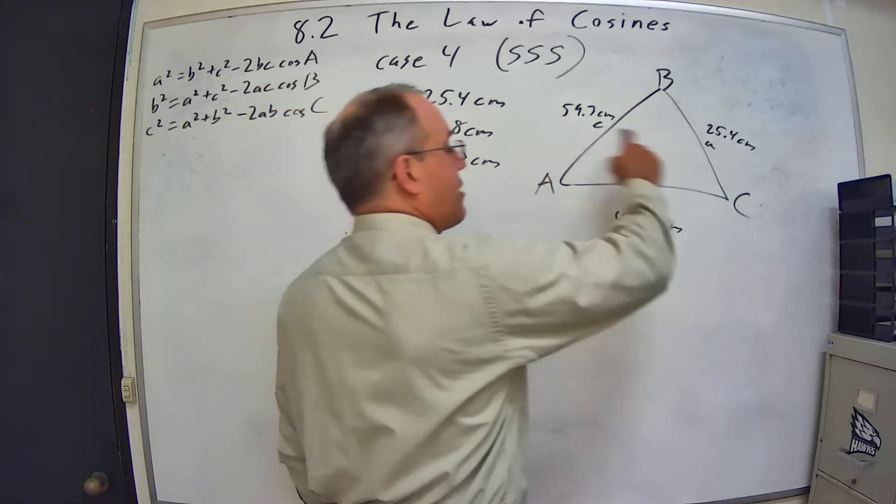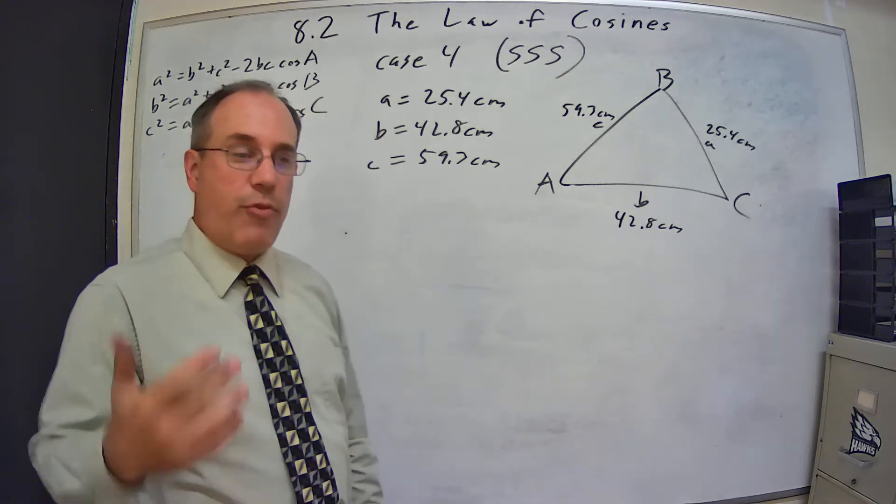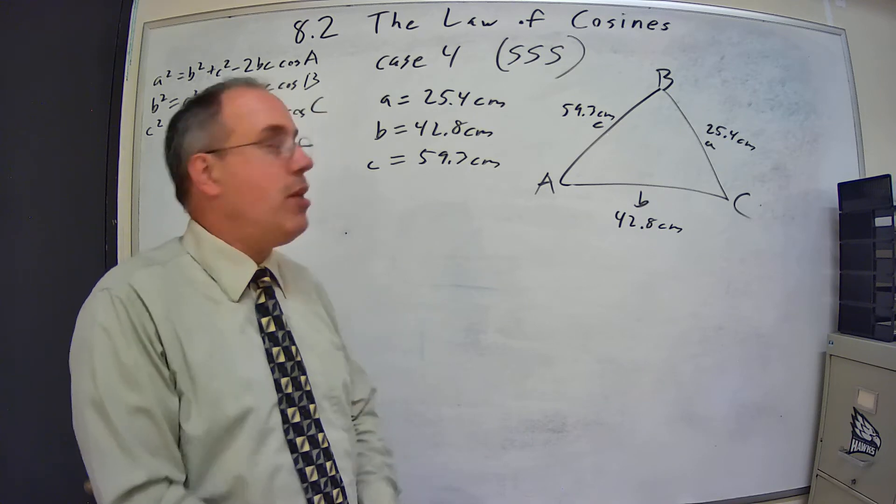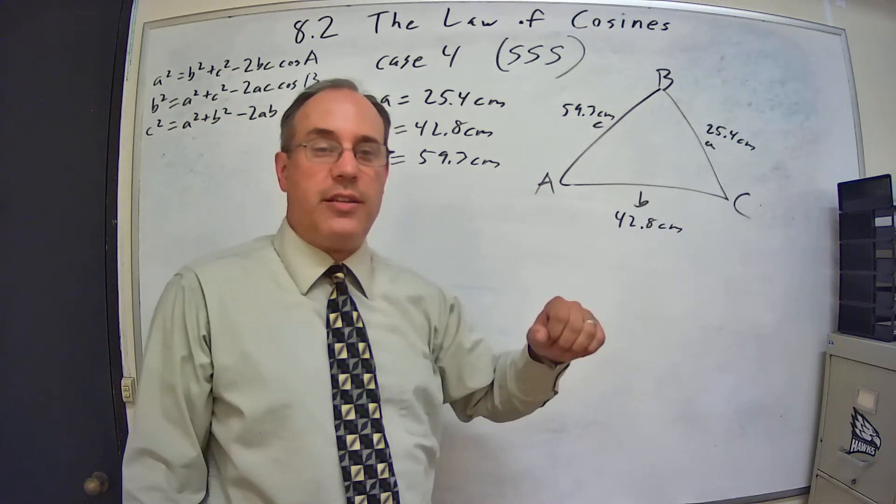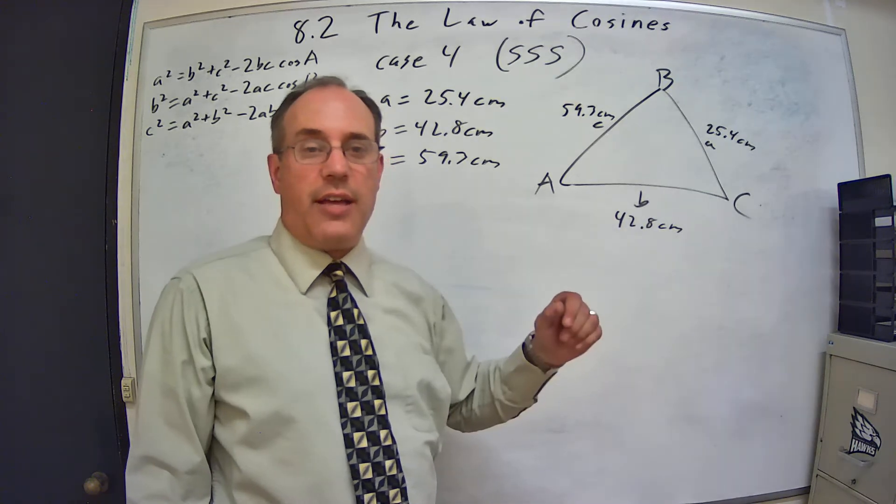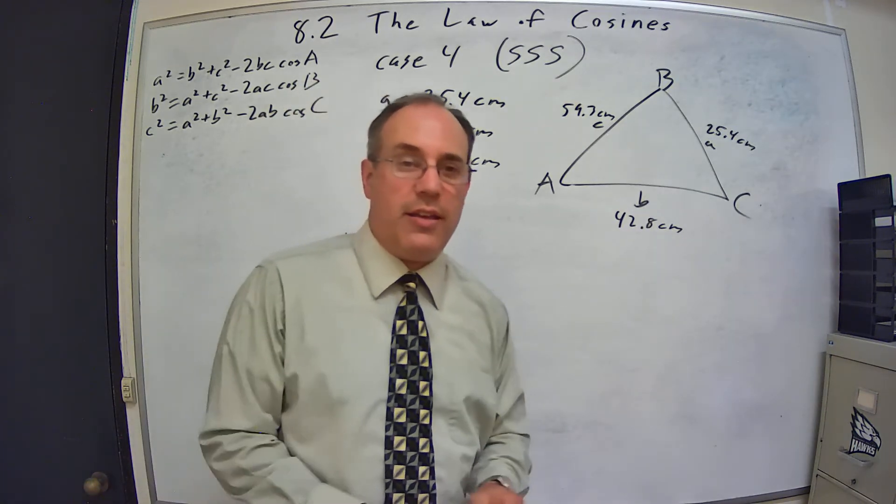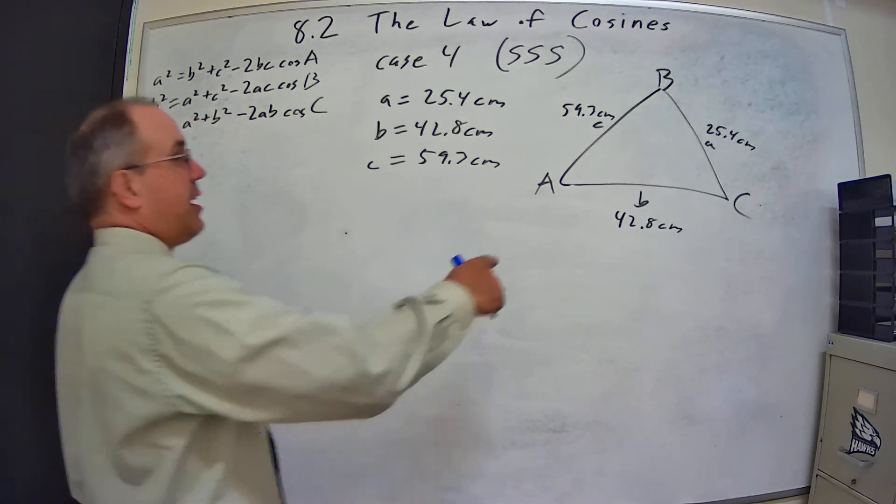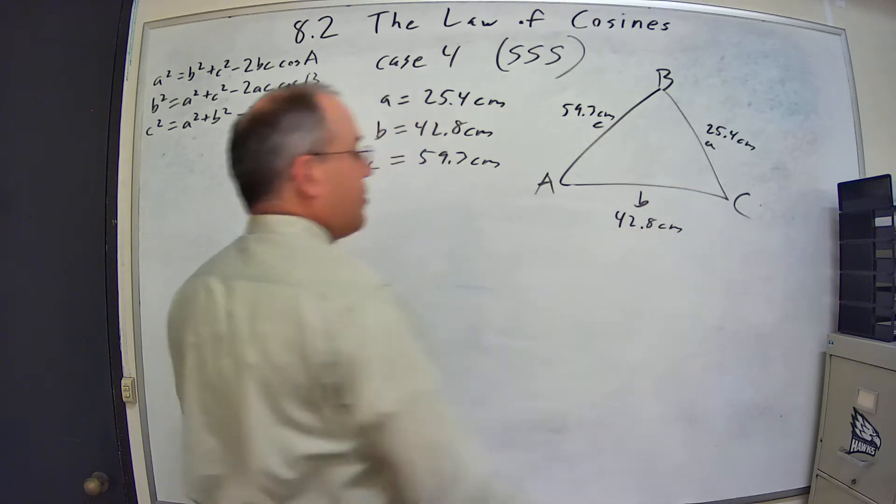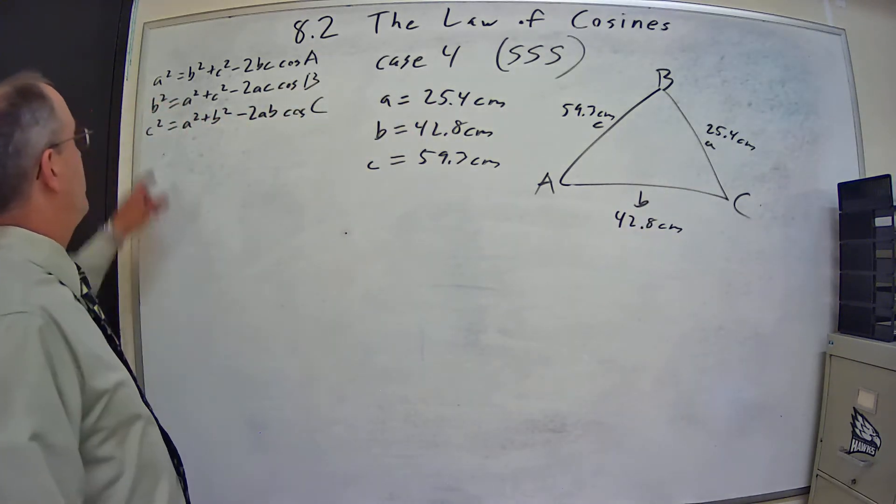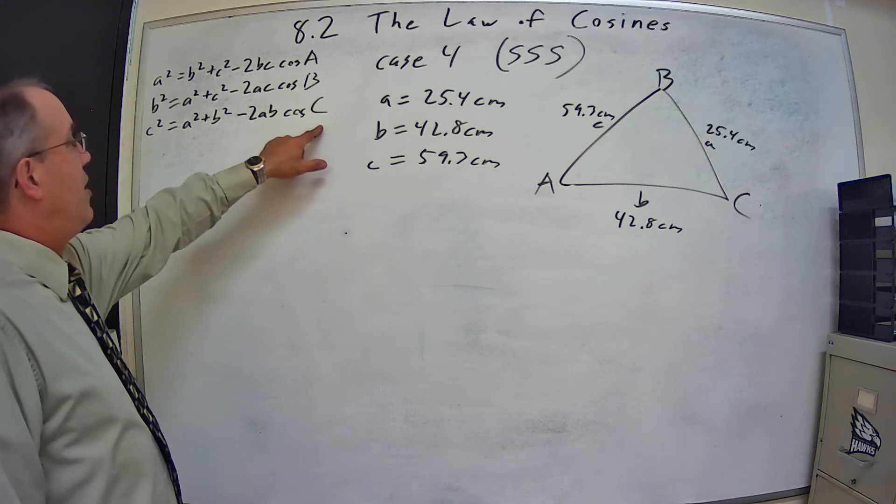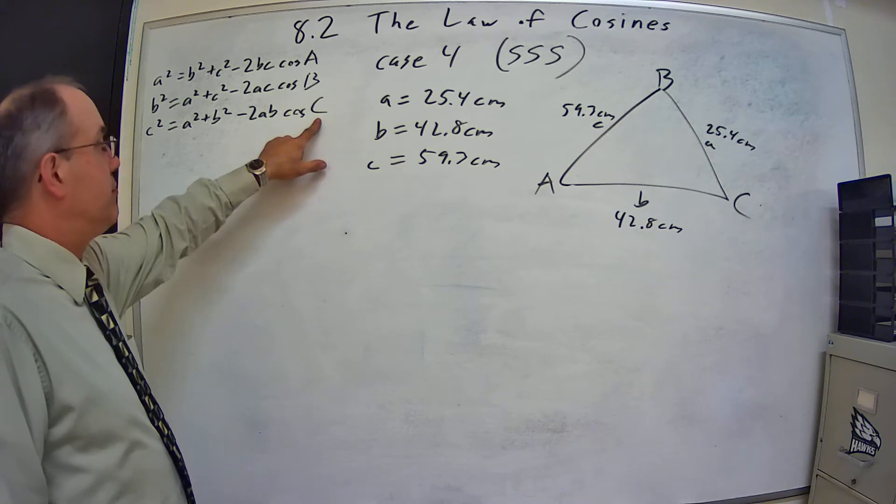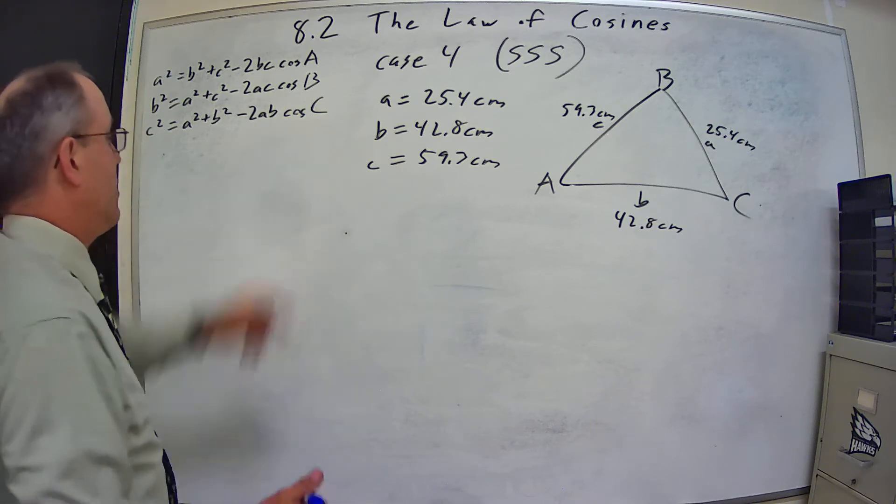So that's my method. I'm going to take the largest side and go for the angle opposite it for my first one because I know that's going to tell me whether it's an acute angle or an obtuse angle. Then I can choose whichever one I want to use the law of sines, and then the third one is just found by using the sum of interior angles. So I look at this and I go, c is my largest side, so c is going to be my largest angle. So I'm going to use the formula, or the equation, that includes angle c.